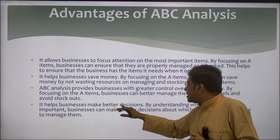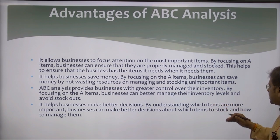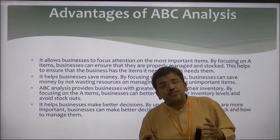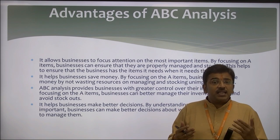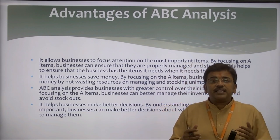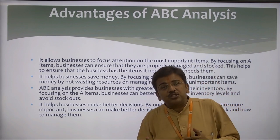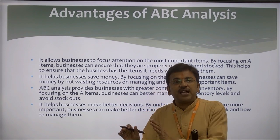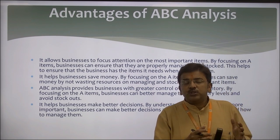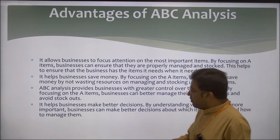Fourth, ABC analysis helps businesses make better decisions. By understanding which items are more important, businesses can make better decisions about which items to stock and how to manage them. With inventory divided into three parts — A, B, and C — management knows what is most important and what has the least importance. This information tells the business which products require active and keen interest for proper storage, and which inventory requires less attention than A items.